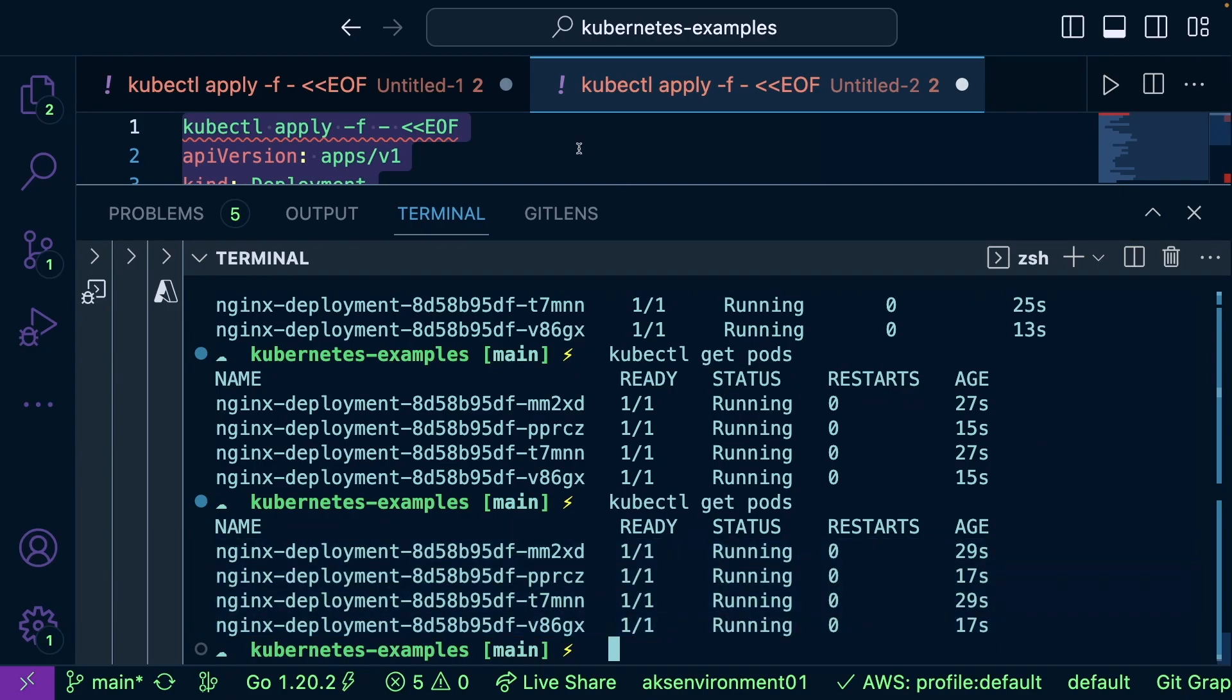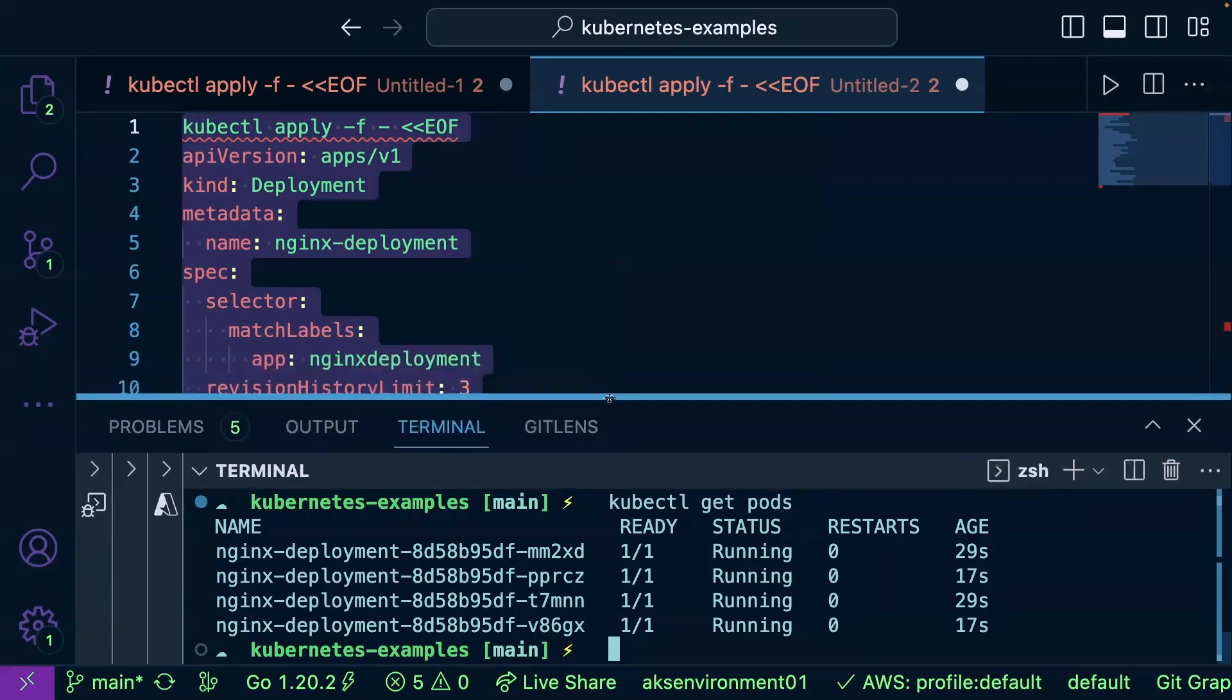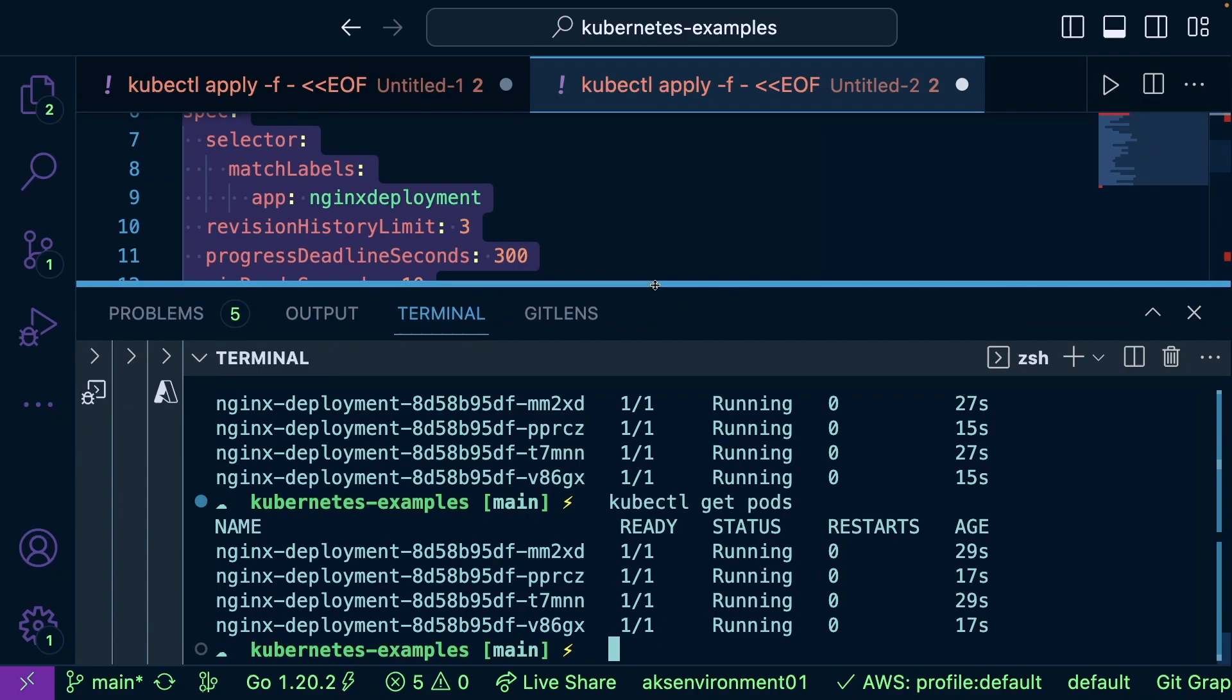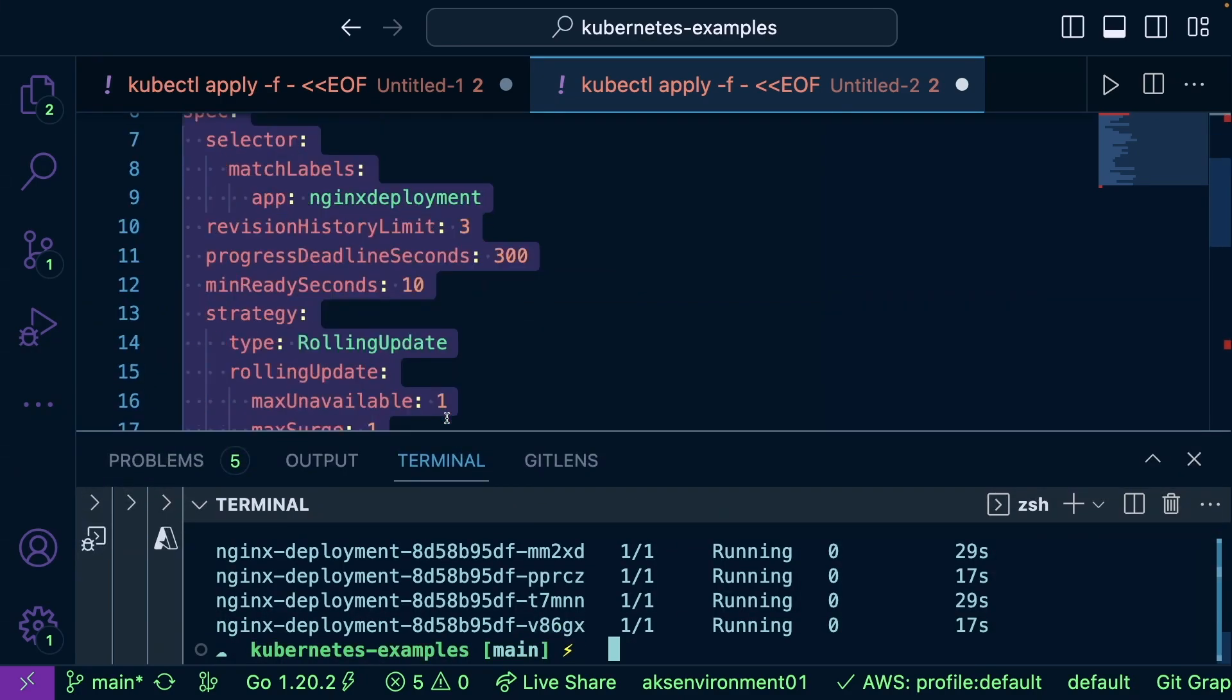It goes through, creates new and terminates old, confirms that everything is working as expected, and then you are left with the new version of the application running. Versus if you had to delete the old one and deploy the new one, you'd have downtime. But in this instance, you do not have downtime. That's the gist of a rolling update.